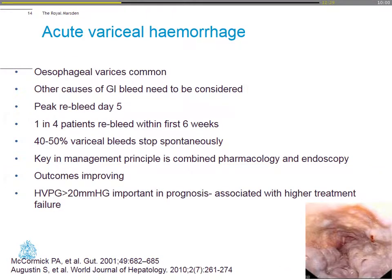Moving on to acute variceal hemorrhage: esophageal varices is common in this patient subgroup, but other causes of GI bleed need to be considered. The peak re-bleed day is day five, and one in four patients re-bleed within the first six weeks. In 50% of cases, despite any treatment, the bleed stops spontaneously. Key to the management principle is pharmacology and endoscopy, and outcomes for this subgroup of patients are really improving. Hepatic venous pressure gradient is important: greater than 20 mmHg is associated with higher treatment failures.